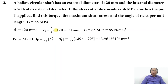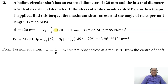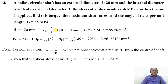From the torsional equation we have T by J equals tau by R, where tau is the shear stress at radius R from the center of the shaft. Given that the shear stress at the inside, that is at the inner radius, is 36 MPa, therefore R equals 90 by 2, that is the inner radius equals 45 mm, and tau at that point equals 36 Newton per mm square, as given in the problem.